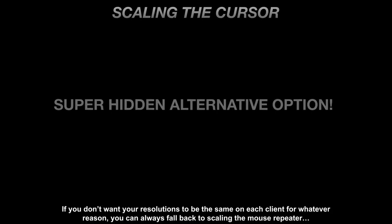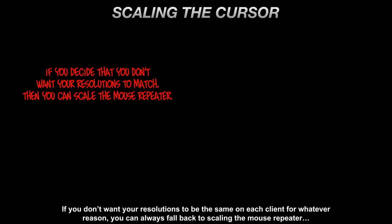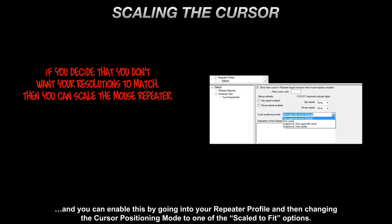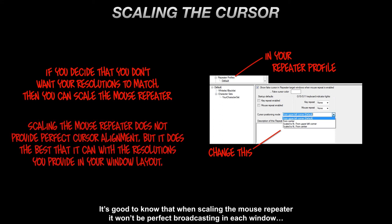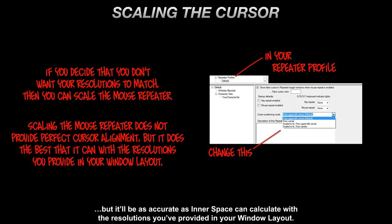Fifth — that's right, there's a hidden fifth option. If you don't want your resolutions to be the same on each client for whatever reason, you can always fall back to scaling the mouse repeater. You can enable this by going into your repeater profile and changing the cursor positioning mode to one of the scale to fit options. When scaling the mouse repeater, it won't be perfect when broadcasting in each window, but it'll be as accurate as Innerspace can calculate with the resolutions you've provided in your window layout.